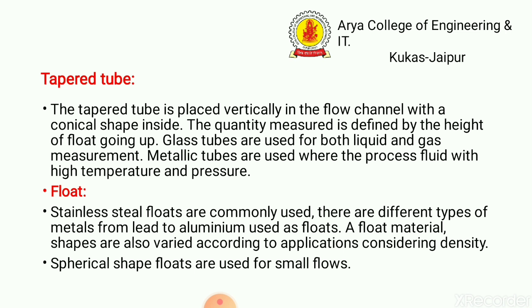The Rotometer has two components: one is the tapered tube and the other is the float. The taper tube is placed vertically in the flow channel with a conical shape inside. The quantity measured is defined by the height the float rises. Glass tubes are used for both liquid and gas measurements. Metallic tubes are used where the processed fluid is at high temperature and pressure.